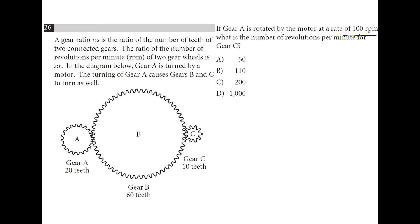So gear A is rotated at 100 RPM. If you look at the ratio in teeth, 20 to 60. Every time gear A turns three times, gear B is going to turn once. So we're going to take 100 and we're going to multiply that by 1 to 3 ratio. Then, every time gear B turns once, gear C turns six times. So we're going to multiply by a 6 to 1 ratio. And overall, we'll end up at 200.